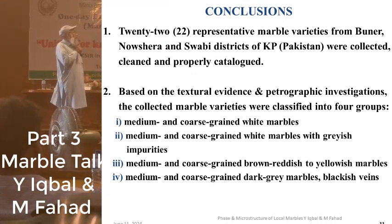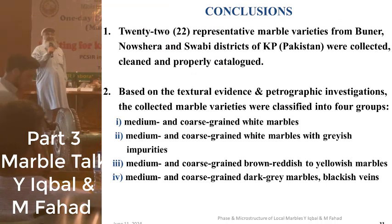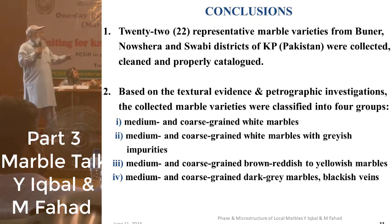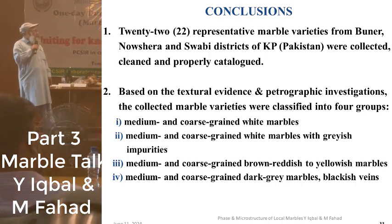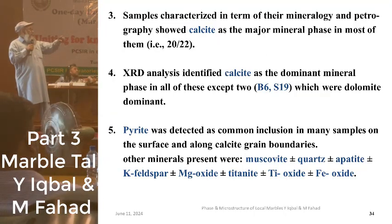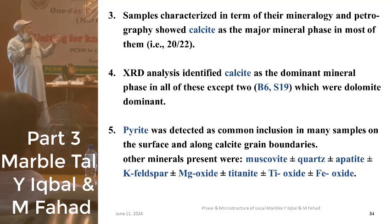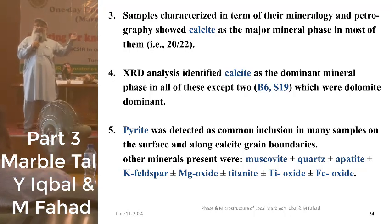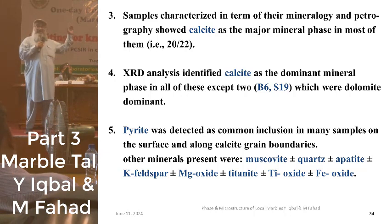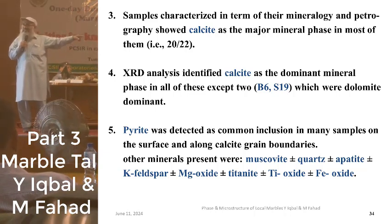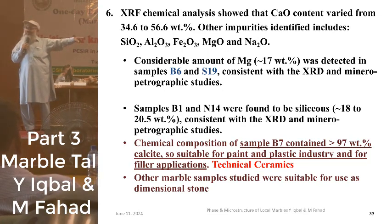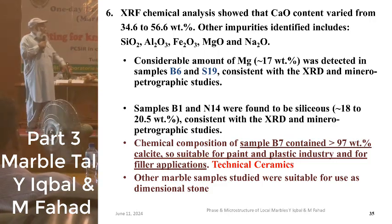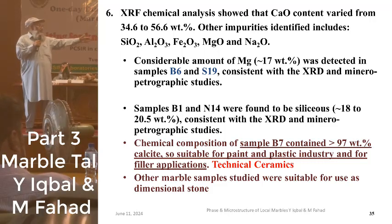22 representative marble varieties from Longshira and Sawabi districts of KP were investigated based on textural evidence and petrographic investigation. The marble varieties were classified into four groups. Samples were characterized in terms of mineralogy. XRD showed calcite as the major phase, along with quartz, pyrite, muscovite, and other phases — except for B6 and S19. B6 is a Buner sample and S19 is a Sawabi sample, where the dominant phase was dolomite. Pyrite was detected as a common inclusion in most samples.